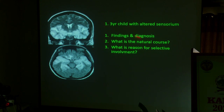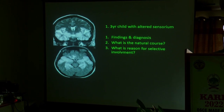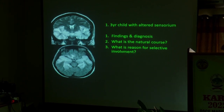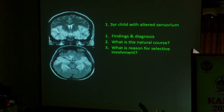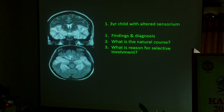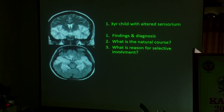A 3-year-old child with altered sensorium. I have given two sets of images. What are the findings? What is the natural course of the disease? What is the reason for selective involvement? Anyone from the top row?